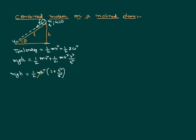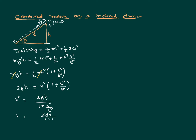Now we can cancel the m's and simplify: 2gh equals v² divided by (1 + k²/r²). Therefore v² equals 2gh divided by (1 + k²/r²). That implies the velocity of the body on reaching the bottom is the square root of 2gh divided by (1 + k²/r²). This is the velocity with which the body is going to reach the bottom of the inclined plane.